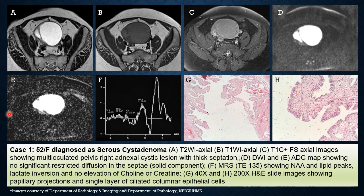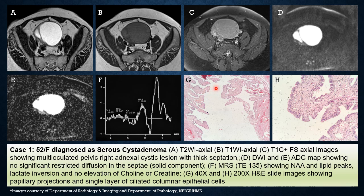The first case was a 52-year-old female diagnosed as serous cystadenoma after imaging and HPE. The T2-weighted axial image, T1-weighted axial image, and T1-weighted post-contrast fat-suppressed axial image showed a multi-loculated cystic right adnexal lesion with thick septation having intermediate signal on T2-weighted imaging. The trace diffusion image showed no evidence of high signal in the solid component, and the ADC map did not reveal any reduced values or restricted diffusion. Multi-voxel MRS at TE 135 showed an NAA peak and a lipid peak with lactate inversion, but no elevation of choline or creatine, and the choline-creatine ratio was low. HPE with 40x and 200x H&E stain slides showed papillary projections lined by a single layer of ciliated columnar epithelial cells.